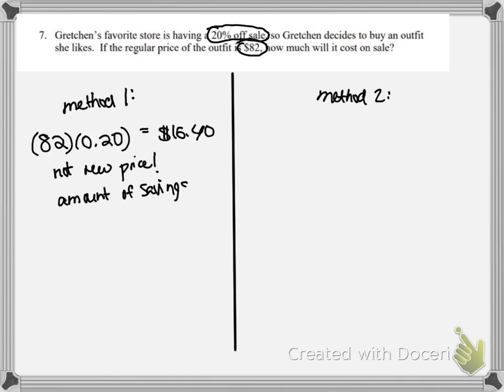This is the amount that she saves, the amount that she does not have to pay for this outfit. So she's paying $82, that's the normal price, minus her savings, which is $16.40. So the sale price is $65.60.